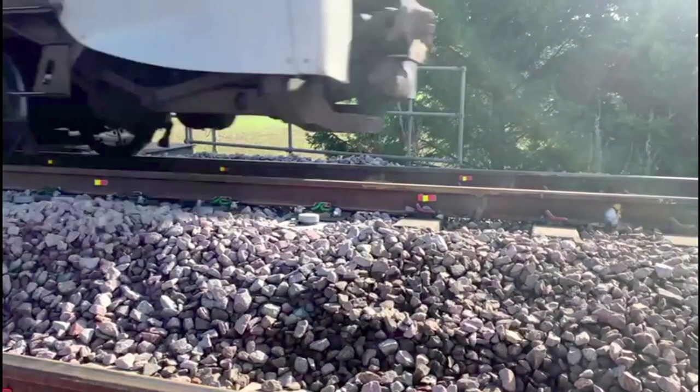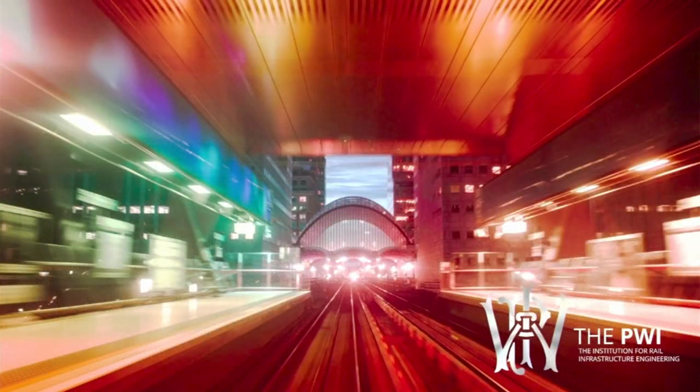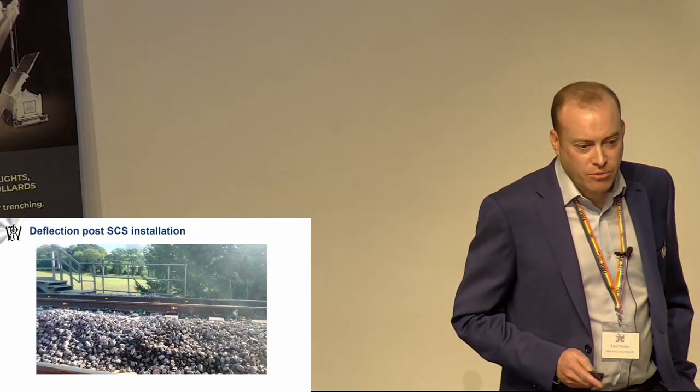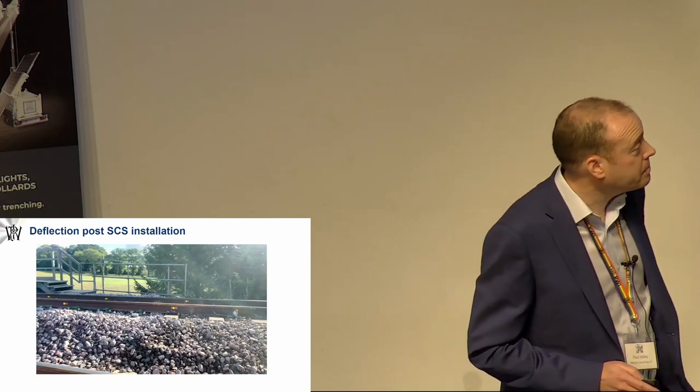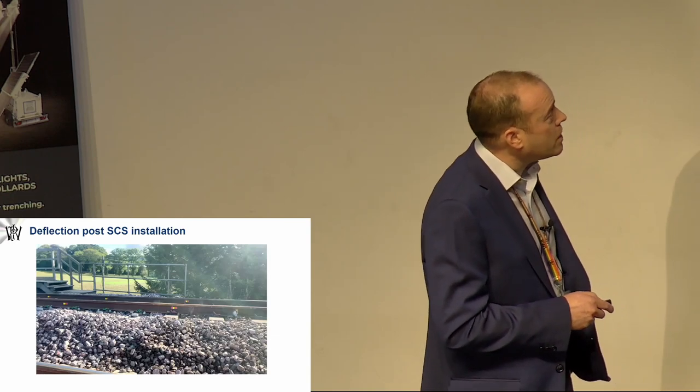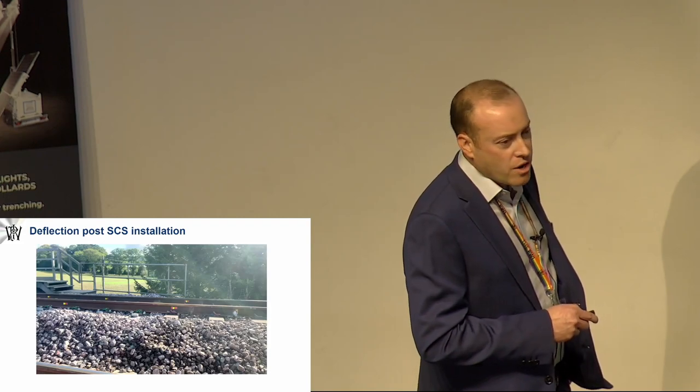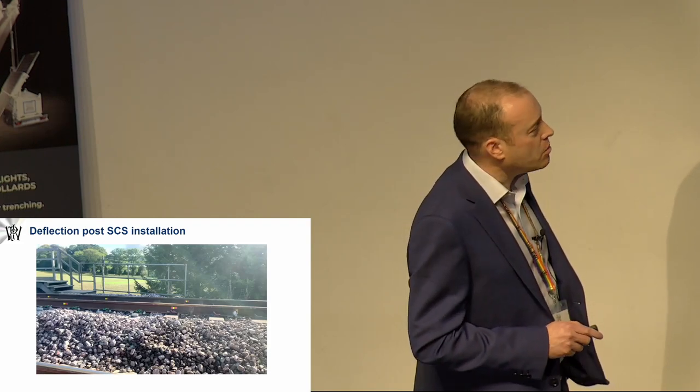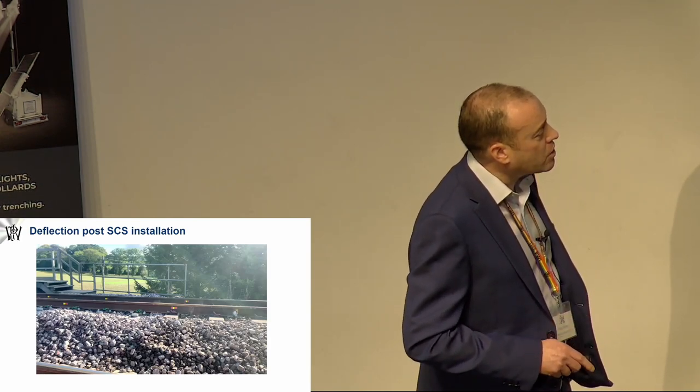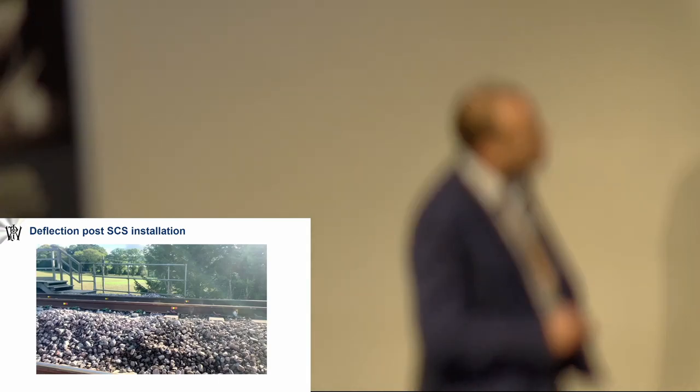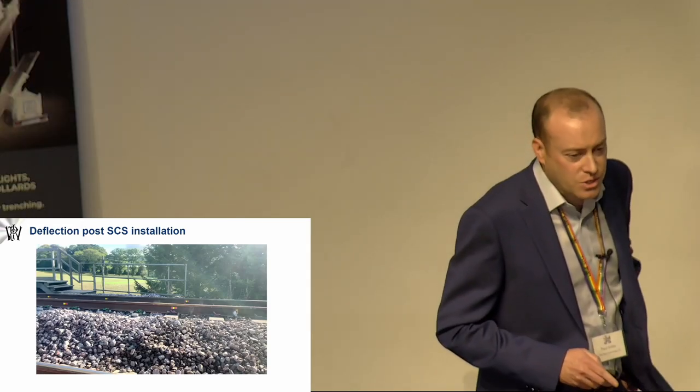This is after installation, removal of the temporary speed restriction. Basically, we put the track back in and within a matter of a day we'd opened all of those routes up and got rid of the temporary speed restriction that never came back again. As part of this, we did monitoring, so we did level surveys, we ran the track recording car over it. In the next slide you'll see we did 3D optical displacement measurements. We also had some deflection monitors on there as well, looking at the difference between the last SCS and the first existing sleepers.